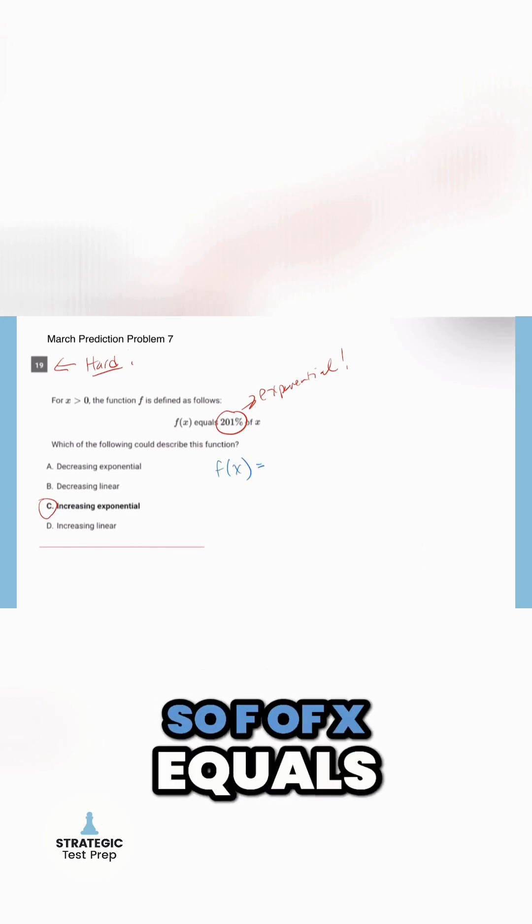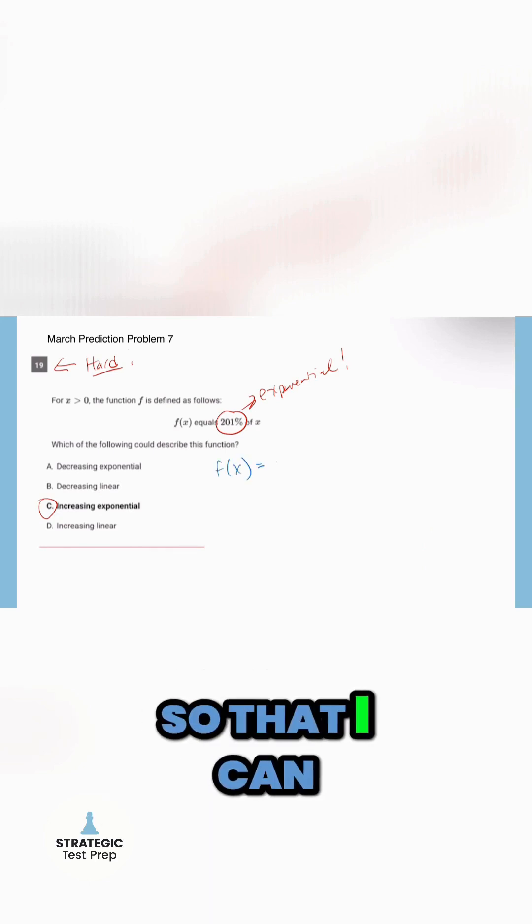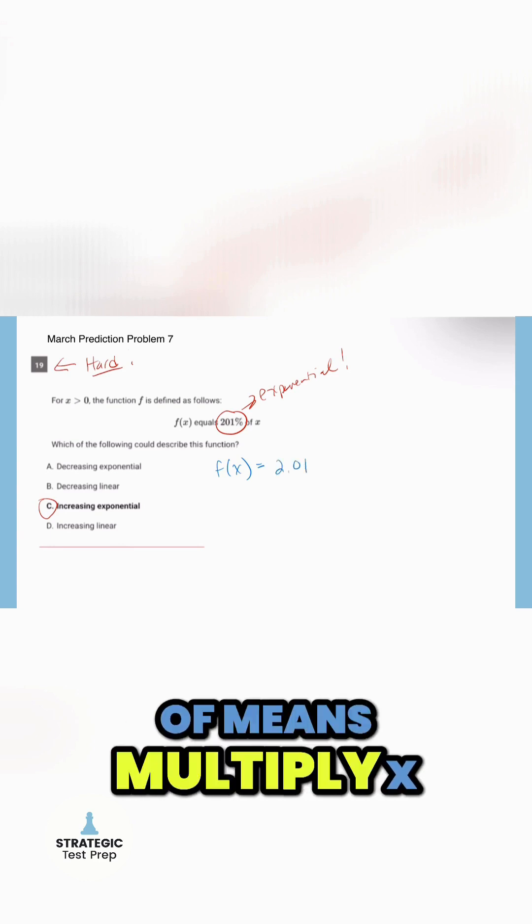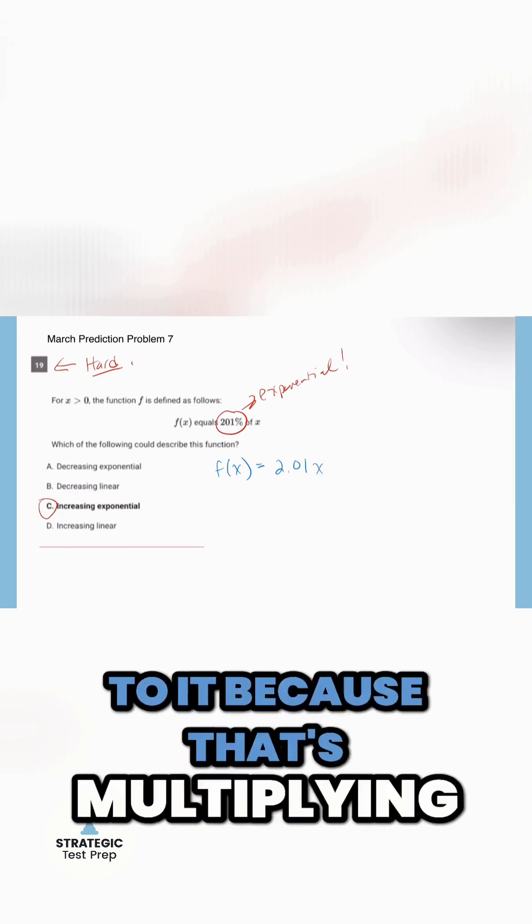So f of x equals, well, how do I write 201% so that I can do math on it? I'm going to turn it into a decimal. So that would be 2.01. Of means multiply x, so I'll put the x right next to it because that's multiplying.